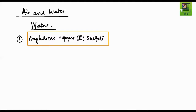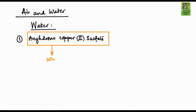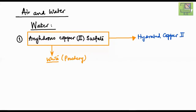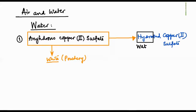Whenever we write any transition element, we should write down the oxidation state of that metal. The oxidation state of copper in copper sulfate is +2. The color of anhydrous copper sulfate is white. When this white powdery substance comes in contact with water, it absorbs the water — water is held between the crystals of copper(II) sulfate and it turns into blue-colored hydrated copper(II) sulfate, which is crystalline.